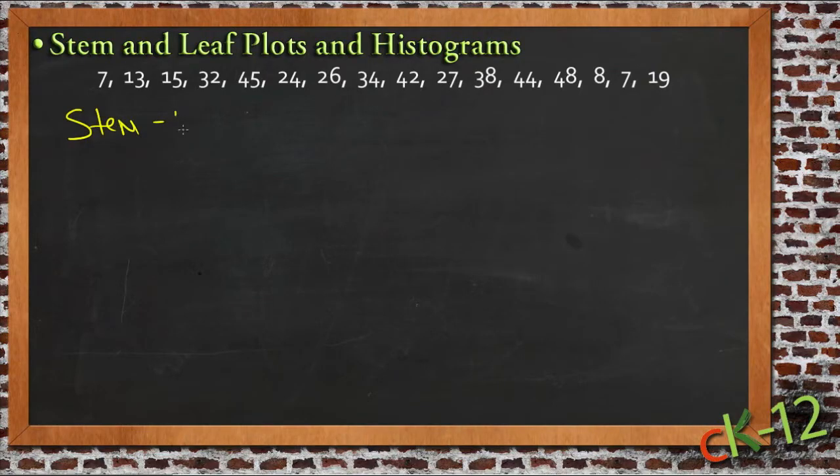We'll do the stem and leaf first. A stem and leaf plot is called that because we use one set of numbers to represent sort of a trunk or a stem of a whole group of other numbers that are related. We do that by, in this case, since all of our numbers are two-digit, we make a trunk that represents the tens column for each number.